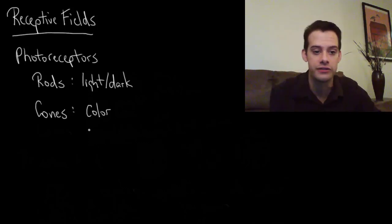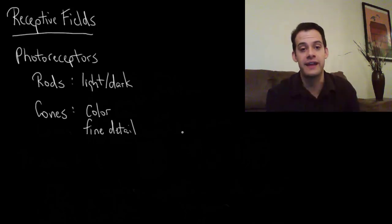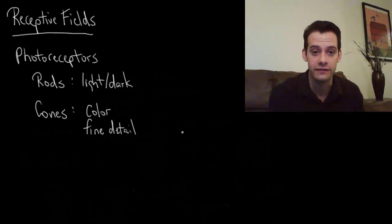Cones allow us to see fine detail. The way that cones are able to see color is that they can respond to different wavelengths of light, and that's what I'll talk about in the next video - we'll look at the different types of cones.